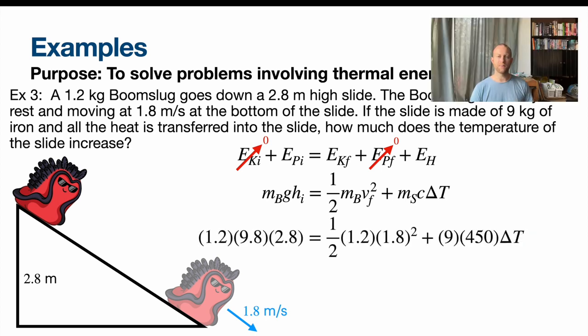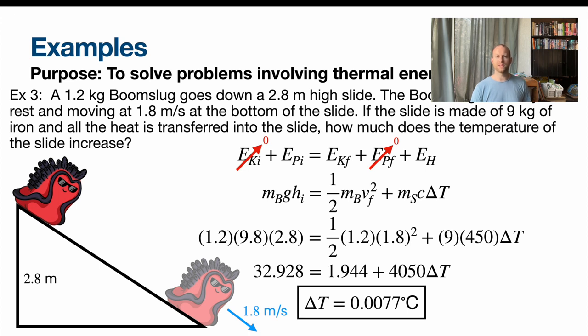From here, we can plug in numbers. I'll show one more step in between to help you with some algebra for this. And we get at the very end, the change in temperature is 0.0077 degrees Celsius. So it's a very small change in temperature, which makes sense. It's a big iron structure. So it's not going to change that much temperature.